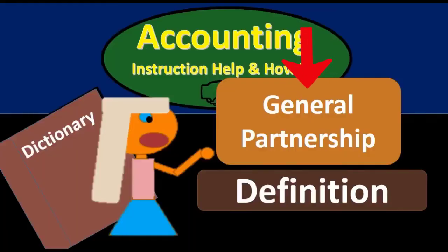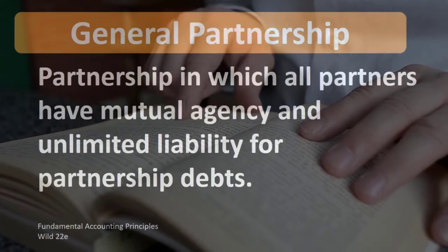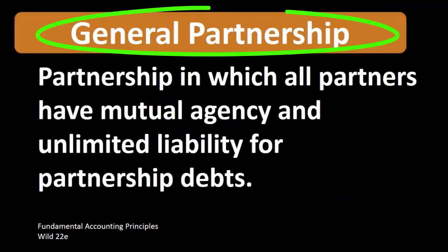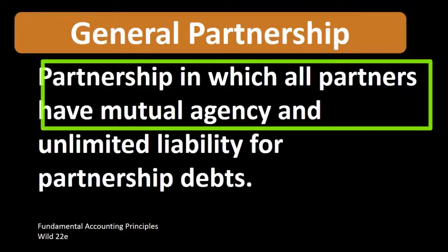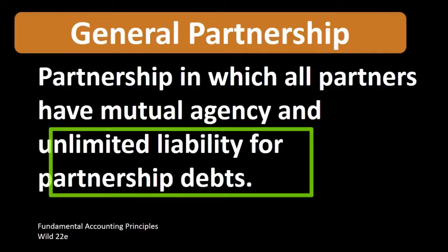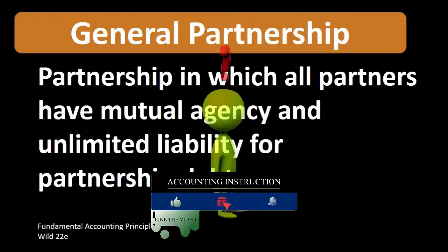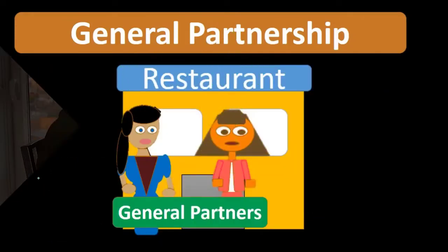In this lecture we will define general partnership according to Fundamental Accounting Principles, Wild 22nd edition. The definition of general partnership is a partnership in which all partners have mutual agency and unlimited liability for partnership debts. A general partnership is the typical type of partnership — when we think of partnerships, meaning that if two or more individuals go into business together.